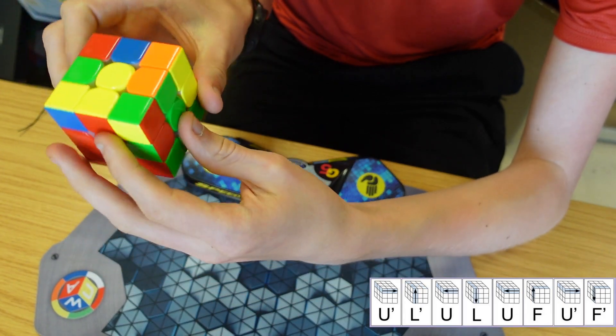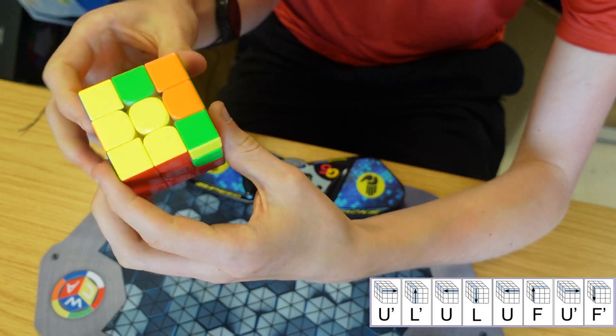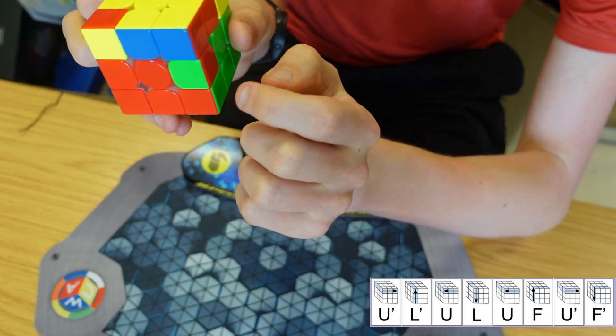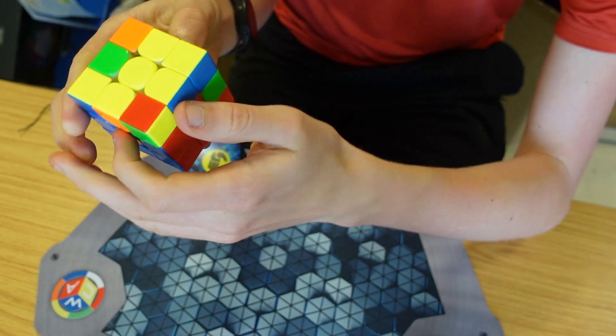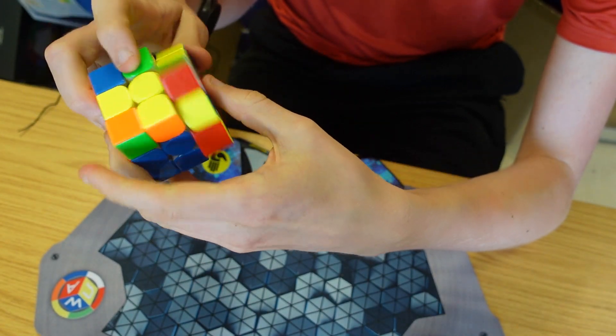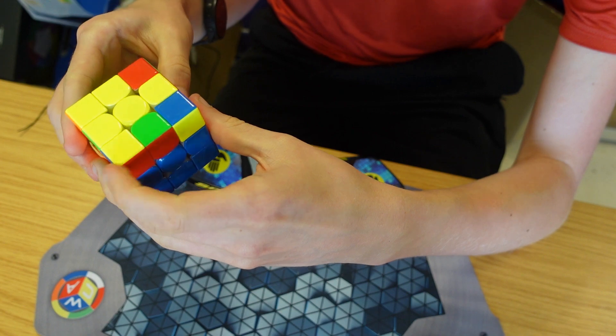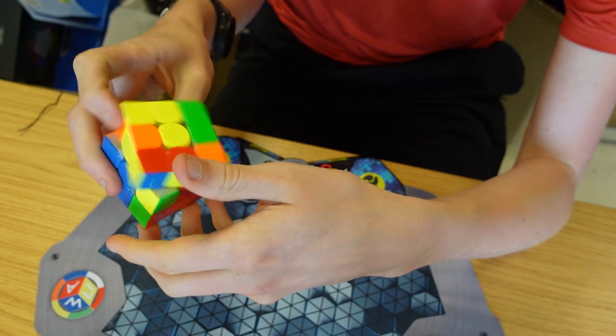Green orange can go there. Occasionally we have a problem where the edge is in the right slot but flipped, so we need to take it out using the same algorithm and put it back in again.